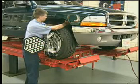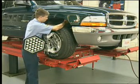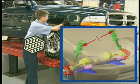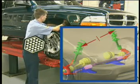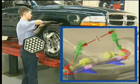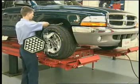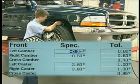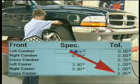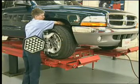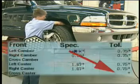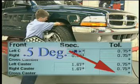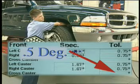If caster cannot be set the same on each side, it should be set so the side-to-side variance does not exceed the manufacturer's specifications. In this example, cross caster should not exceed 0.85 degrees. If a cross caster tolerance is not available, use 0.5 degrees as a rule of thumb.